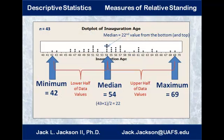Now here is the data we had earlier from the inauguration ages of US presidents, shown as a dot plot. These are the ages at their first inauguration. Our current count gives n equals 43 different presidents. Sometimes you'll hear that Barack Obama was the 44th president, but that's because Grover Cleveland served two terms with someone else in between. I'm counting Cleveland and all others who served multiple terms just once — using their age at first inauguration. So there are 43 different data values.